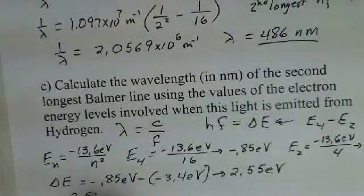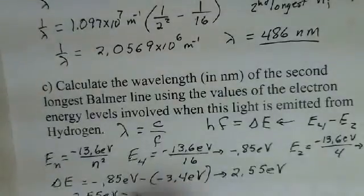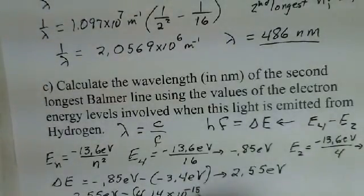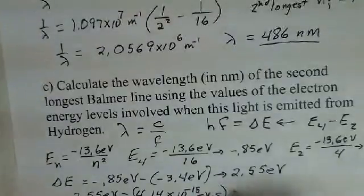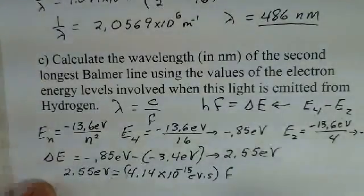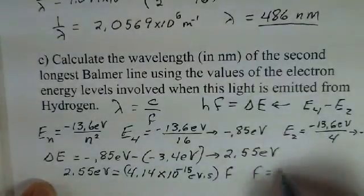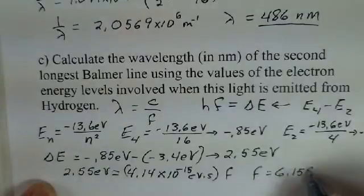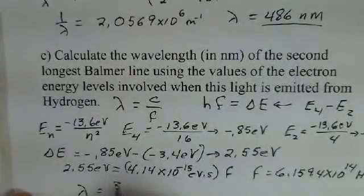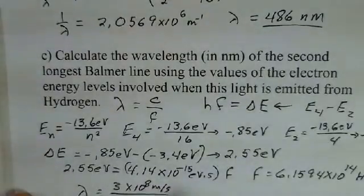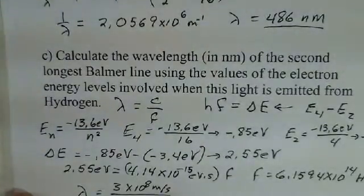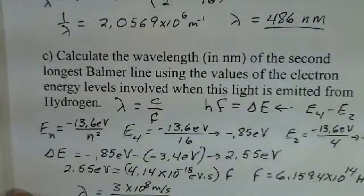So 2.55 electron volts is going to be equal to Planck's constant. And we use the electron volt form of Planck's constant, 4.14 times 10 to the minus 15. That's in electron volts times seconds. And that's multiplied by the frequency we're trying to calculate here. So dividing 2.55 by Planck's constant in the electron volt form, I find a frequency of 6.1594 times 10 to the 14th, 1 over seconds here.